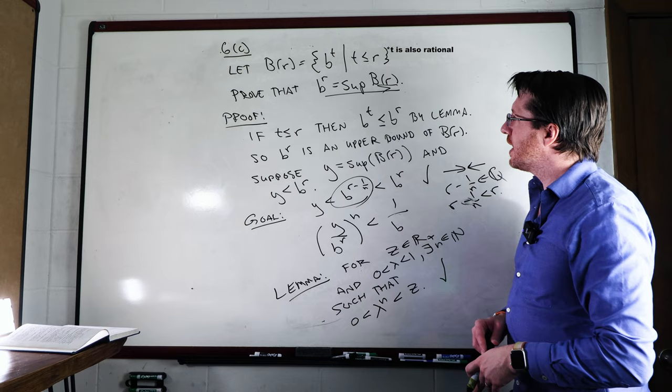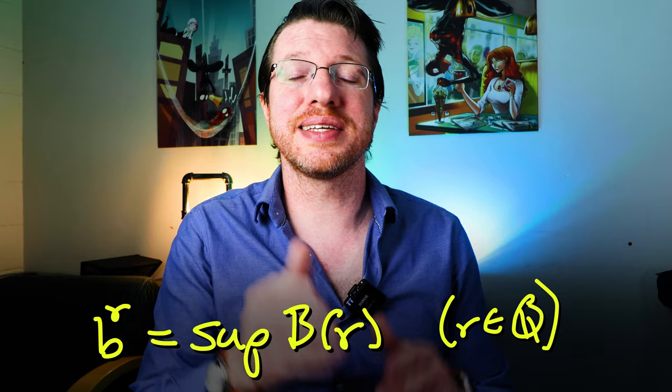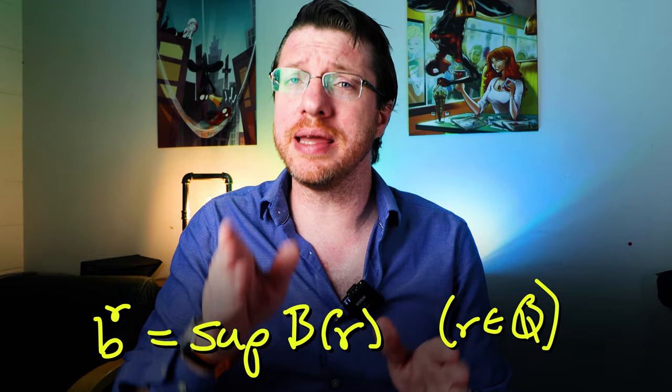And so there you go. That shows us that taking the least upper bound of BR actually agrees exactly with b raised to the r, because b raised to the r is the least upper bound in that set.